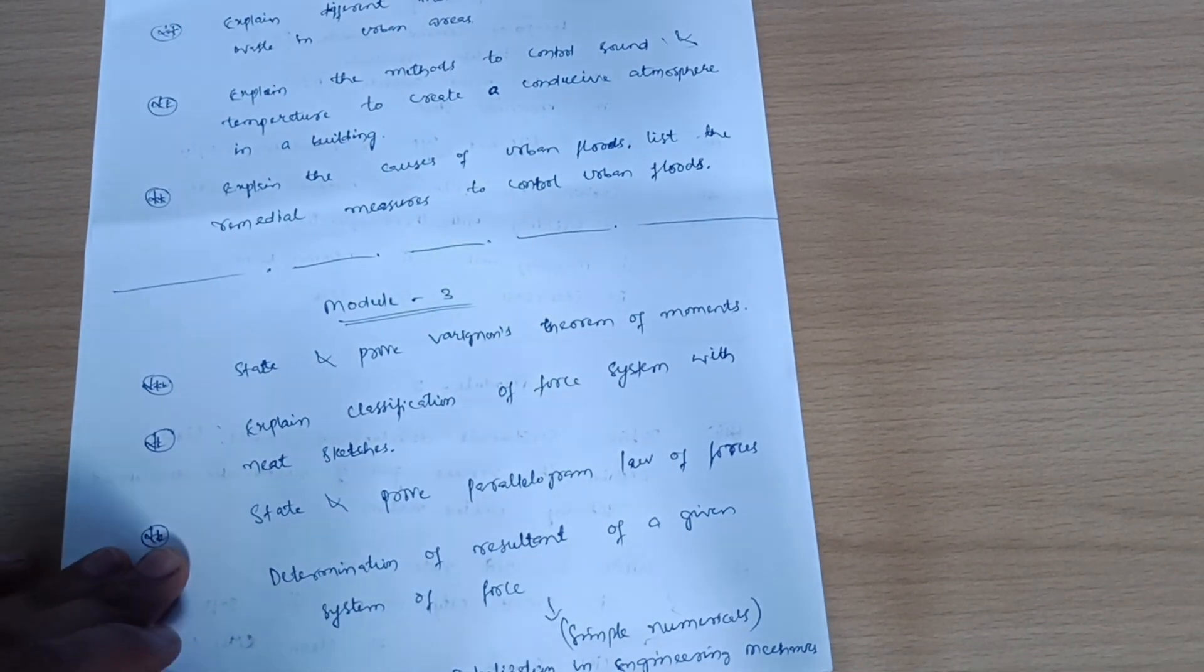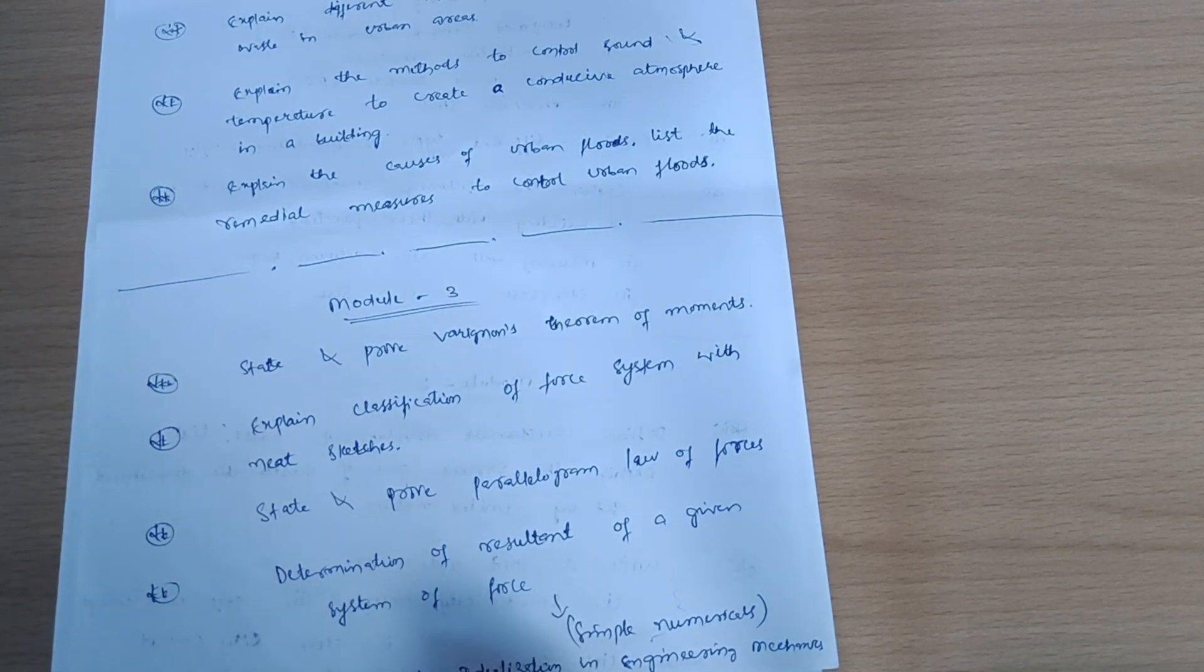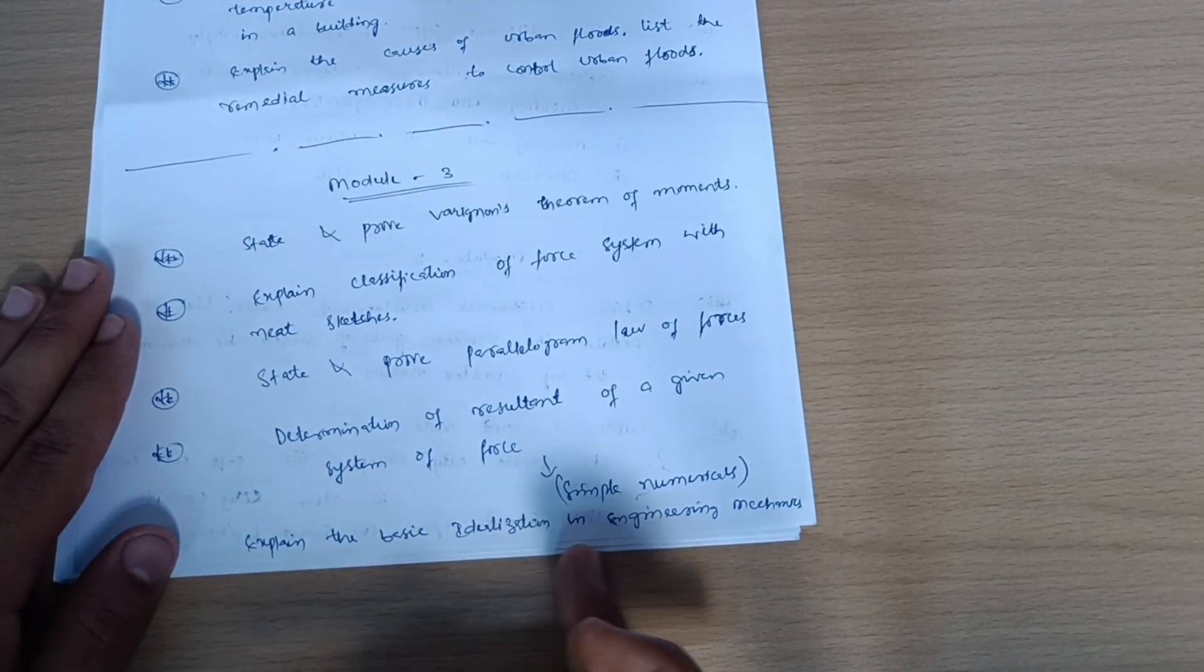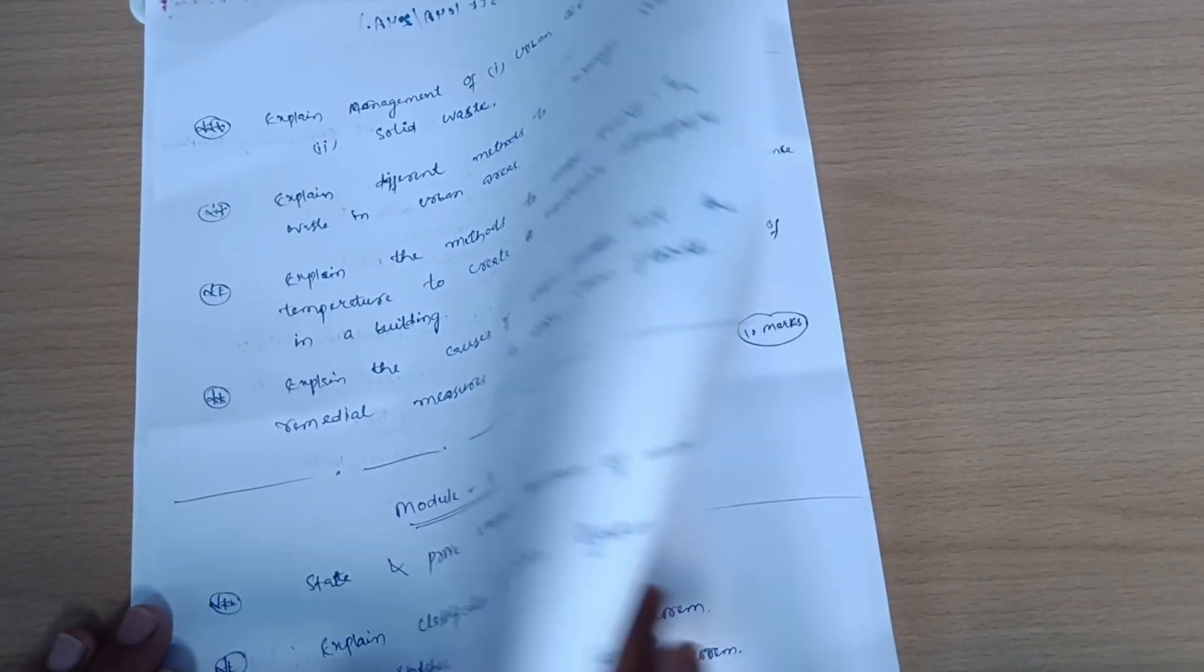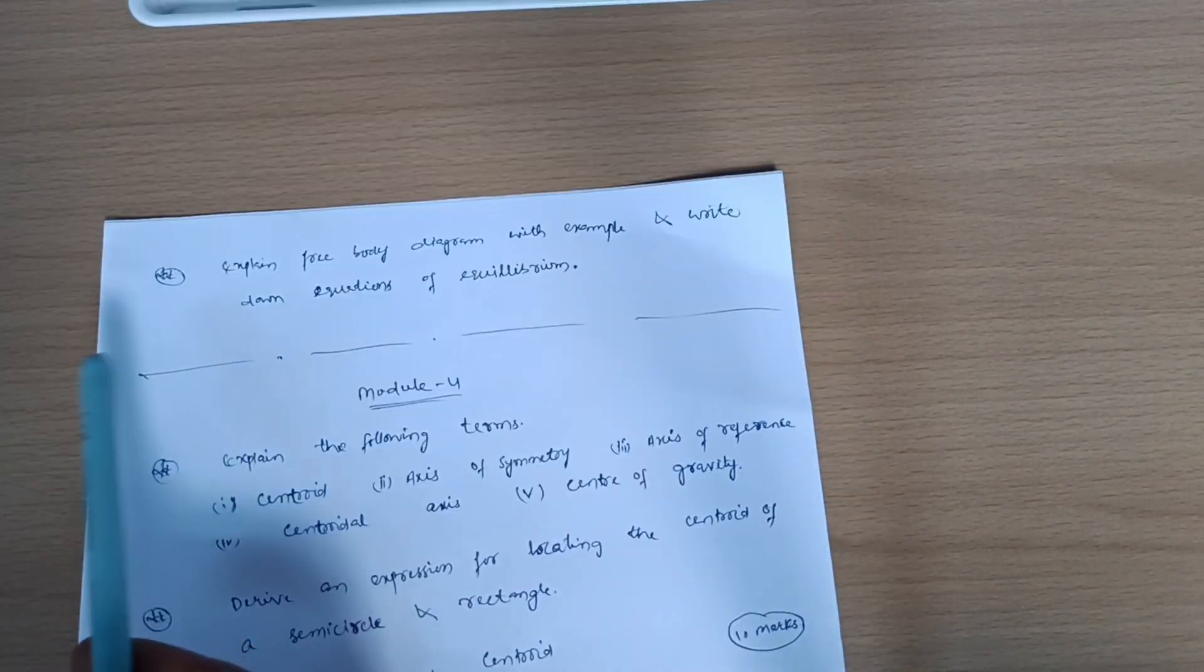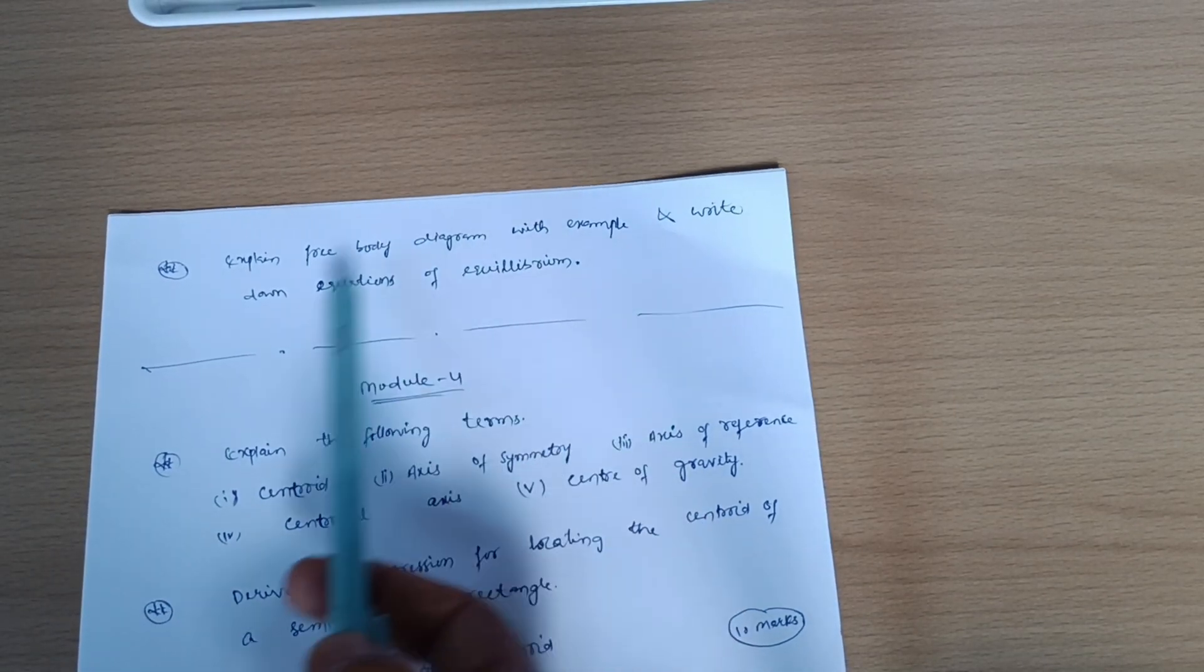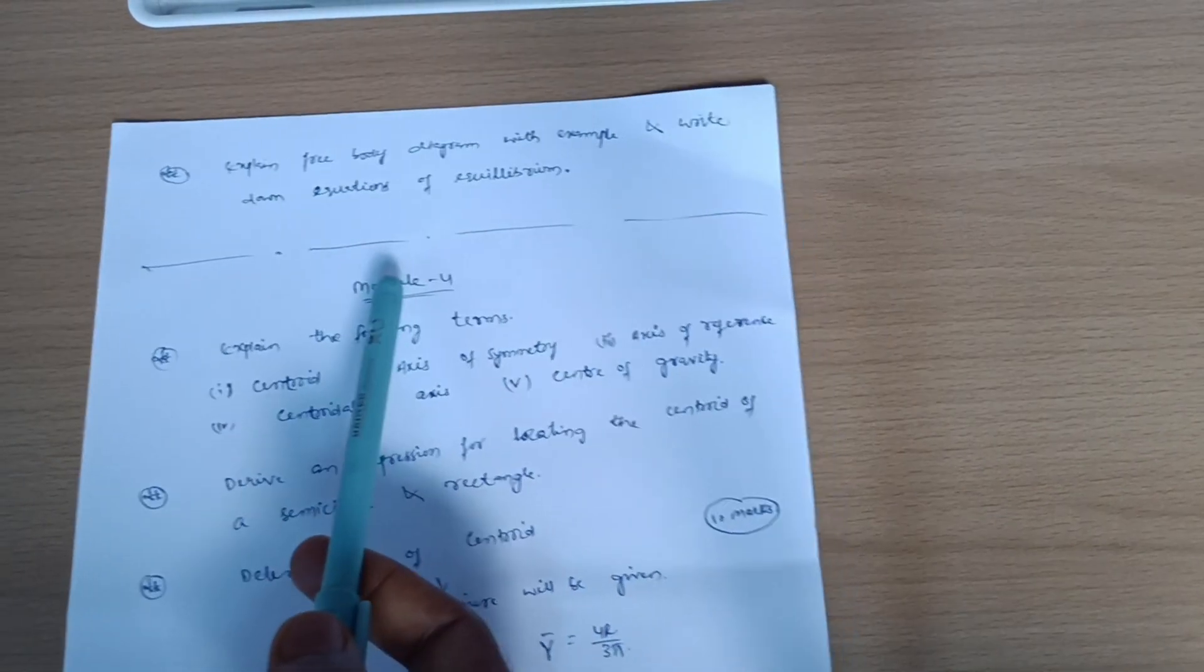Forces will be given, system of forces will be given, you are supposed to calculate the resultant. Explain the basic idealization in engineering mechanics. The last question for model third - explain free body diagram with example and write down equations of equilibrium.